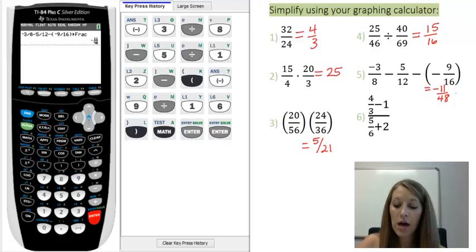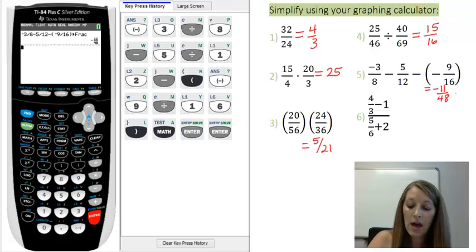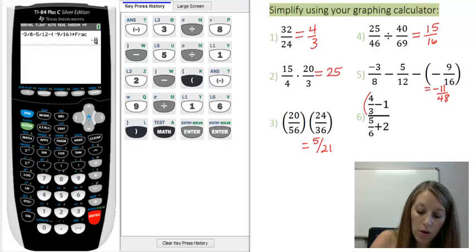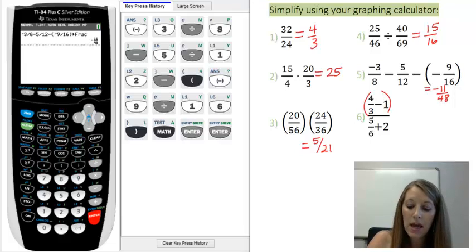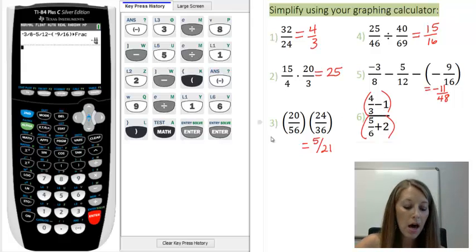Example 6 is a lot like example 4. If I'm going to type this in, I'm going to need to include extra parentheses. I'm going to have to take the whole numerator in parentheses and then divide it by the whole denominator in parentheses. Otherwise, my calculator will interpret it incorrectly.